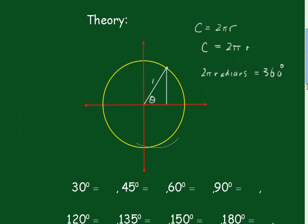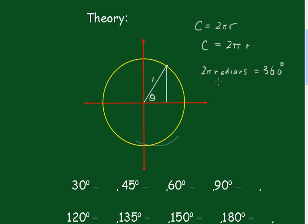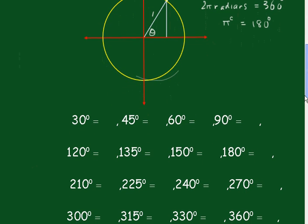So then we'll say that 2π radians is 360, therefore π radians, and rather than writing radians each time, I'll just write a little C up here for circumference, is equal to 180 degrees. Now as we go through, I'll leave up that little C, because you know what I'm talking about.